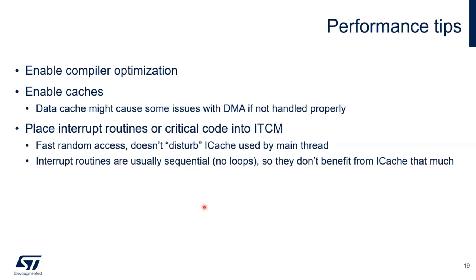General recommendations for performance: enable compiler optimizations, and enable the caches. For the instruction cache there is basically no drawback. For the data cache, be careful with DMAs — the DMA only sees data in RAM, not in the cache — so you need to disable the cache for DMA buffers, which requires additional configuration. If you have critical code or interrupt handlers, place them in ITCM memory to run them faster; since that code is in ITCM, it will not occupy the instruction cache, freeing it for other code.